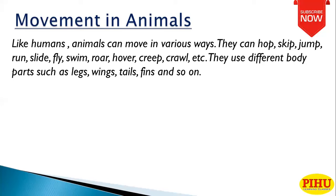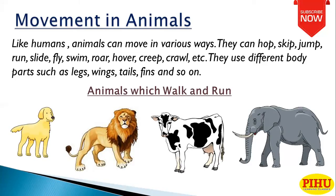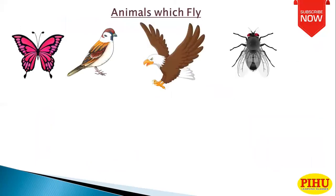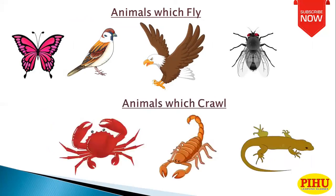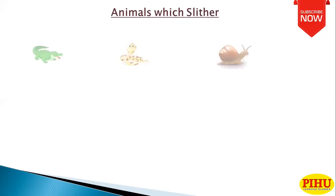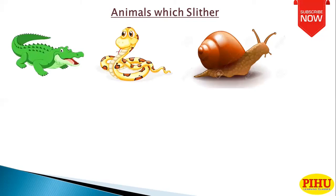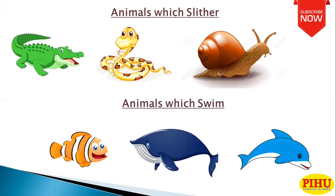They use different body parts such as legs, wings, tails, and fins. Animals which walk and run using legs include dog, lion, cow and elephant. Animals which fly include butterfly, bird, vulture and flies. Animals which crawl include scorpions, crab and lizard. Animals which slither include crocodile, snake and snail. Animals which swim include fishes, blue whale and dolphin.